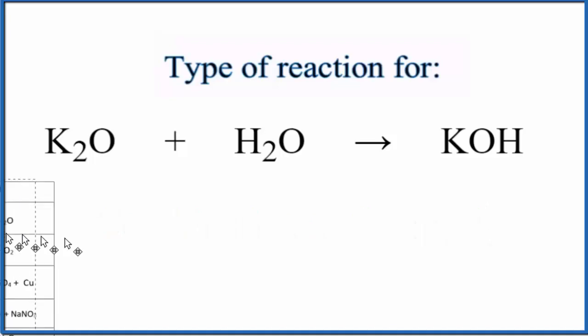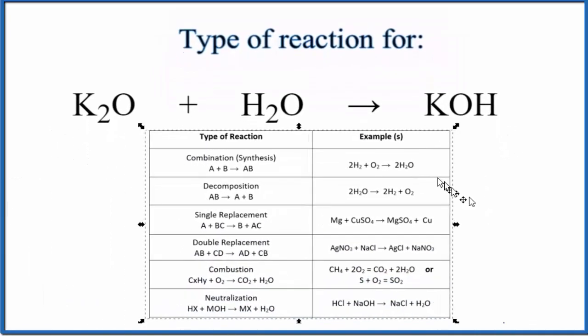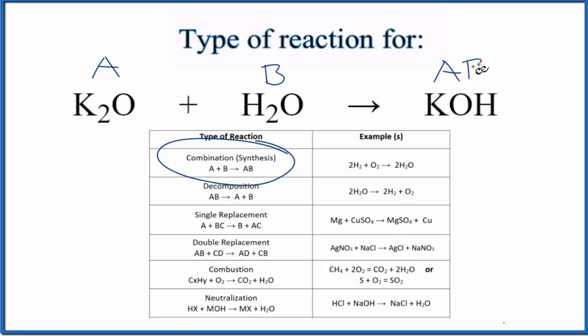Let's take a look at this table here of common reactions. Here's our combination or synthesis reaction. It has this format, A plus B yields AB. So you could consider this substance A, substance B, and then we end up with them combining to form AB.